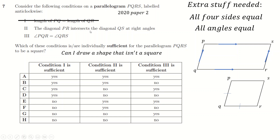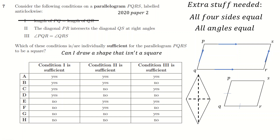What about the diagonals? If you're ever asked a diagonal question, start with the diagonals. Let's start with two diagonals that meet at 90 degrees. If I complete the quadrilateral around them, it's clearly not a square. So diagonals meeting at 90 degrees is not sufficient to say the shape is a square.